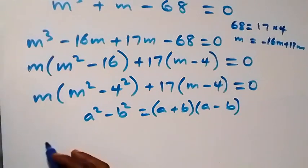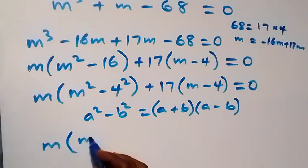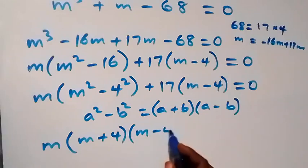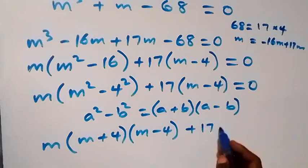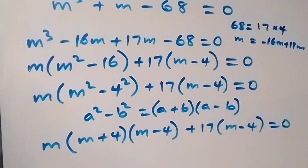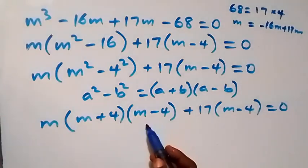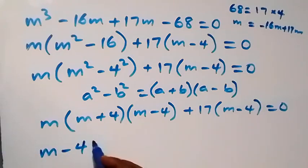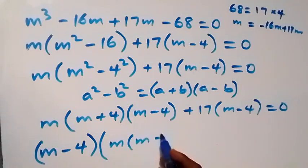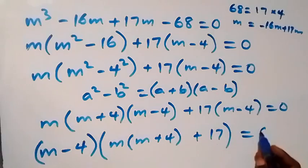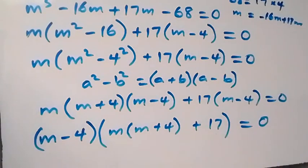We have m times bracket m plus 4 times bracket m minus 4, plus 17 times bracket m minus 4, equals zero. Factoring out m minus 4, we get m minus 4 times bracket m times bracket m plus 4 plus 17, equals zero.